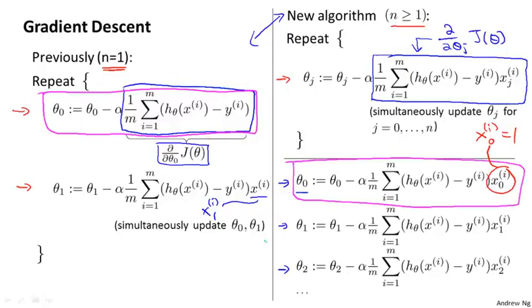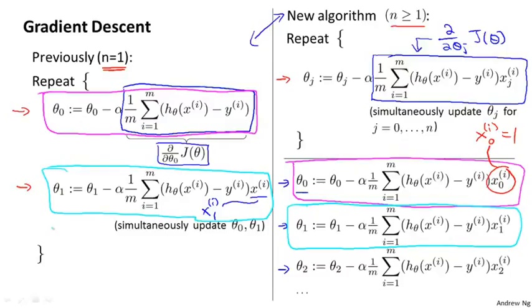Similarly, if you look at the update rule for theta 1, you find that this term here is equivalent to the term we previously had, or the update rule we previously had for theta 1, where we're just using this new notation, x subscript 1, to denote our notation for the first feature. And now that we have more than one feature, we can have similar update rules for the other parameters like theta 2 and so on.